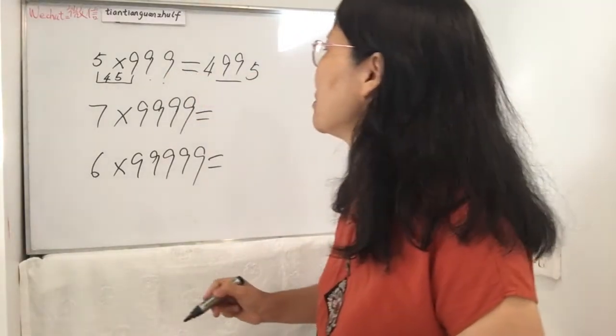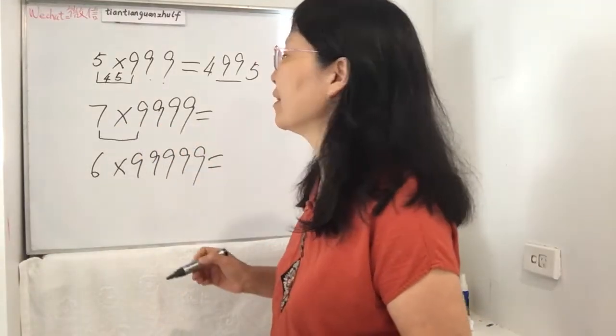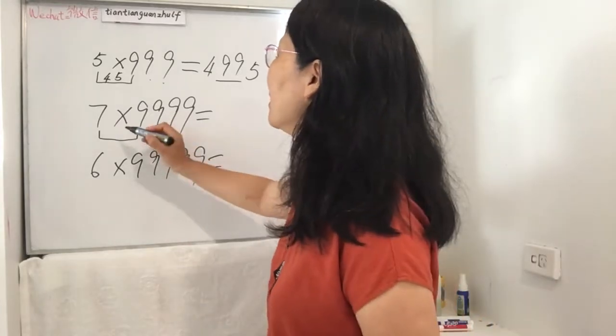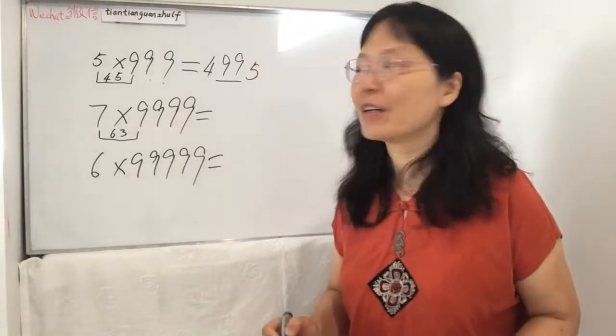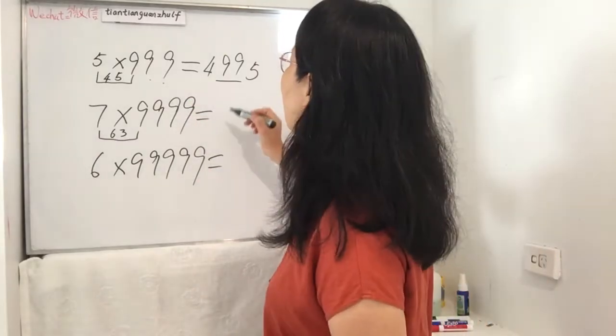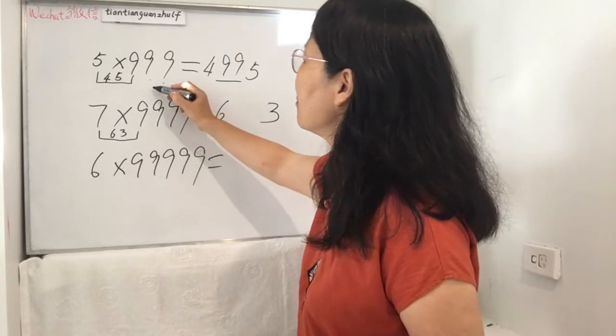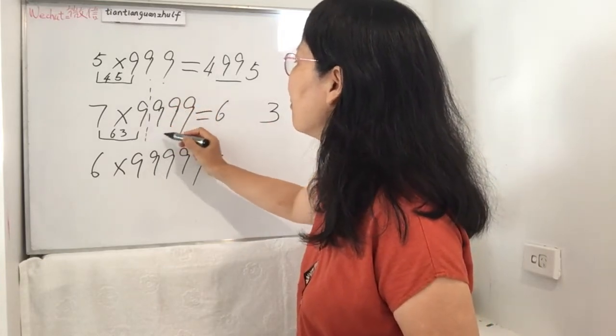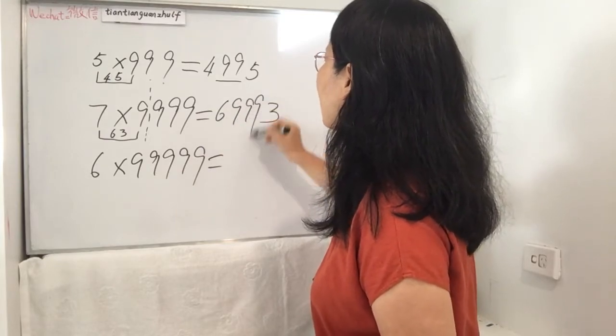Now number 2, 7 times 999. 7 times 9 is 63. You don't write 63 together, you just write them separate. And behind, you still have 3 nines: 1, 2, 3 nines. So you write down 3 nines here.